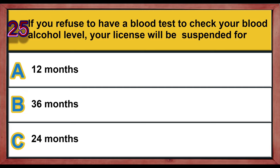Question 25. If you refuse to have a blood test to check your blood alcohol level, your license will be suspended for: A. 12 months. B. 36 months. C. 24 months. Correct answer is A: 12 months.